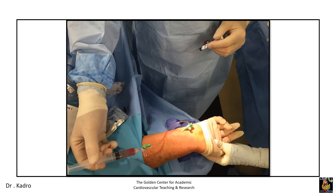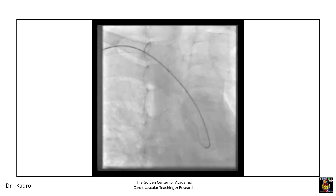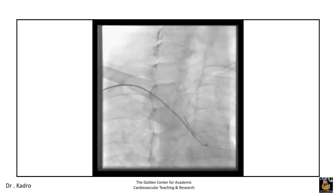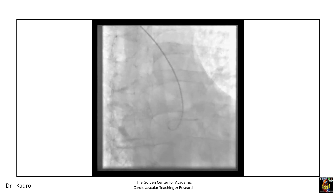Access was obtained, and using a SIM-1 catheter, the catheter was advanced to the ascending aorta and was shaped at the aortic valve. The catheter was then pulled back to the brachiocephalic trunk and slowly pulled back with the tip pointing upward, enabling it to engage the right internal carotid artery.